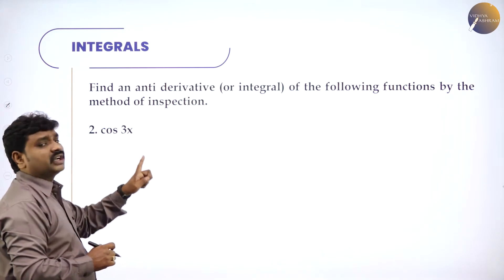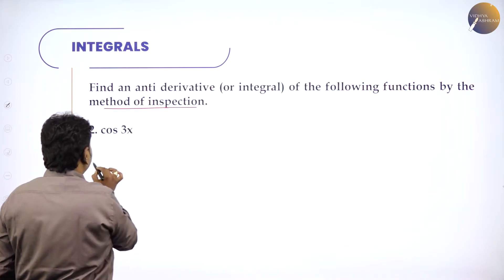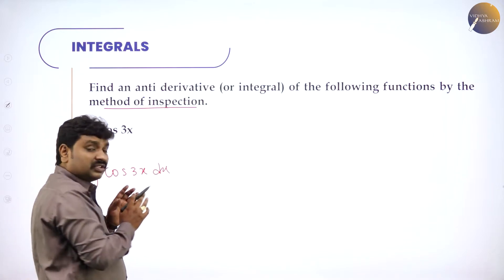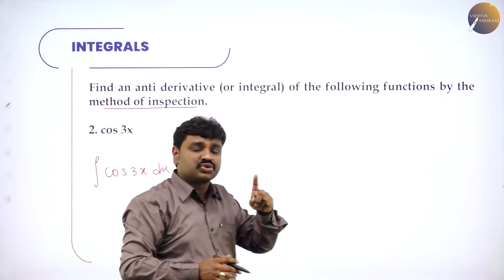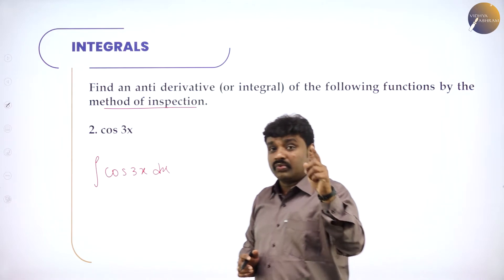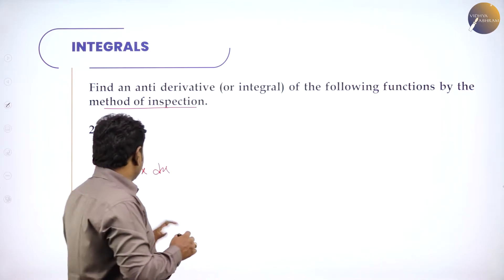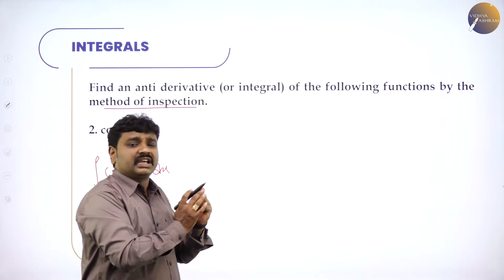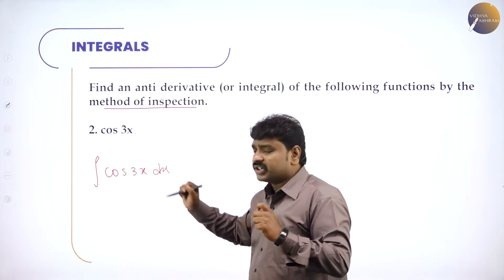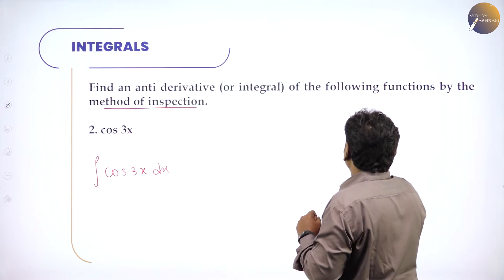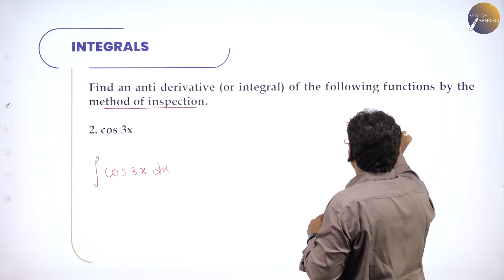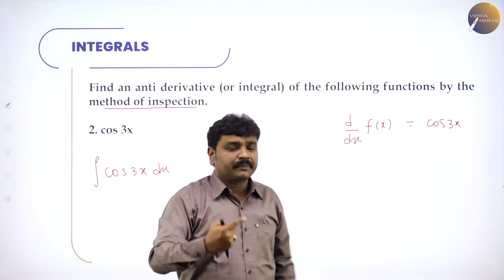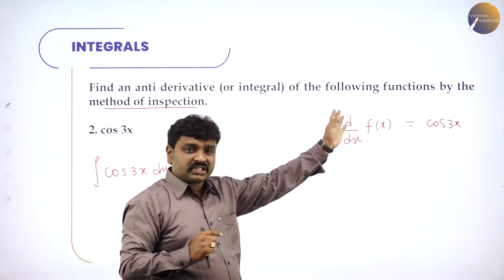Next: what if you differentiate to get cos 3x? By inspection, find the integration of cos 3x dx. Later we will do the same problem by substitution, so the process becomes easier. But now we want you to understand the link. So the question is: integration of cos 3x dx — find the anti-derivative. Anti-derivative and integral are the same thing. Means: what if you differentiate, you will get cos 3x? So d/dx of f(x) should give cos 3x. Do inspection.